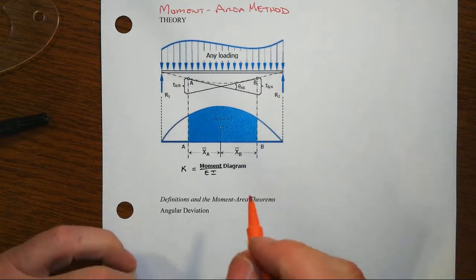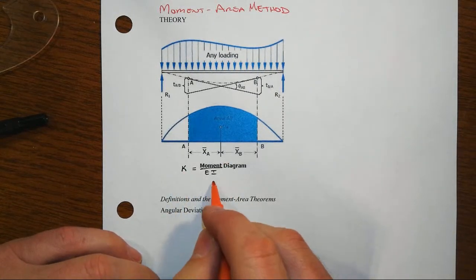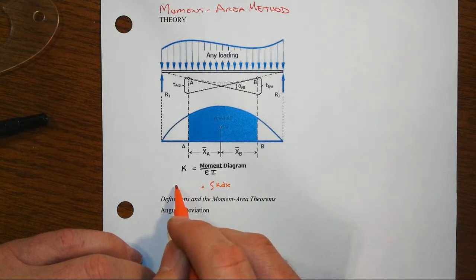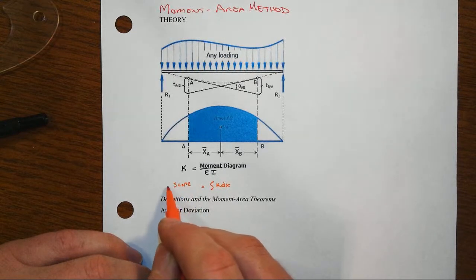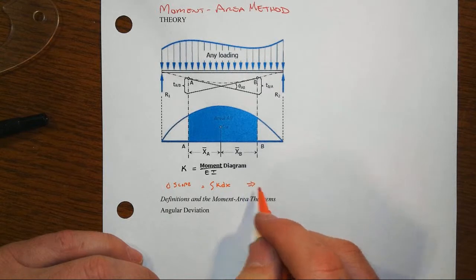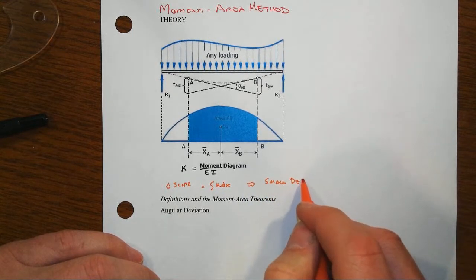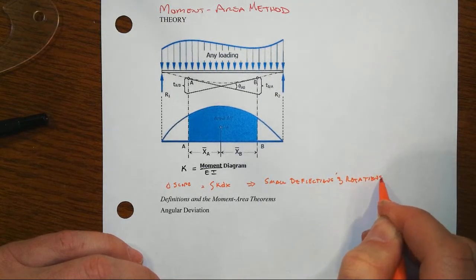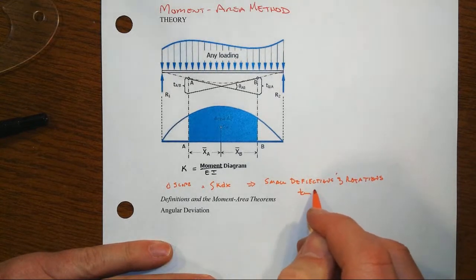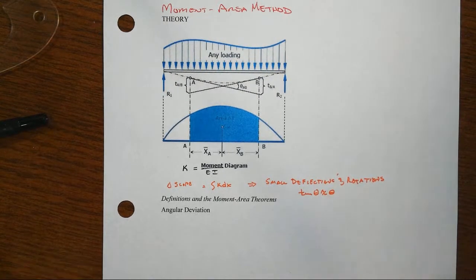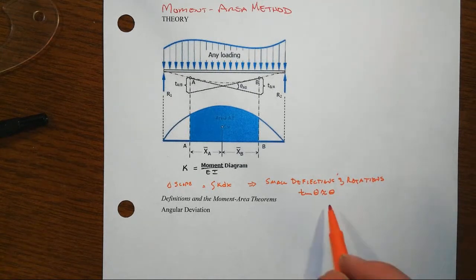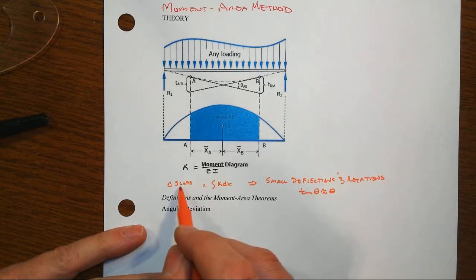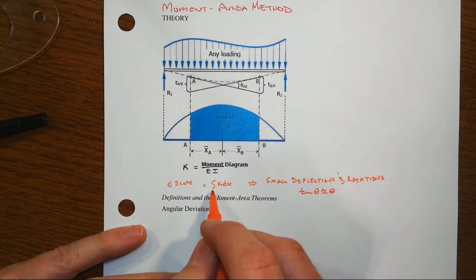If we take one integral of kappa, we're going to end up integrating curvature to get something associated with slope. Now if it's a definite integral then we'll get a delta change in slope. Since we have small deflections to begin with and small rotations or slopes, we find that tangent of theta is approximately equal to theta in radians. So oftentimes instead of about the slope we'll talk about the rotation itself, and a change in slope is a definite integral associated with our curvature.